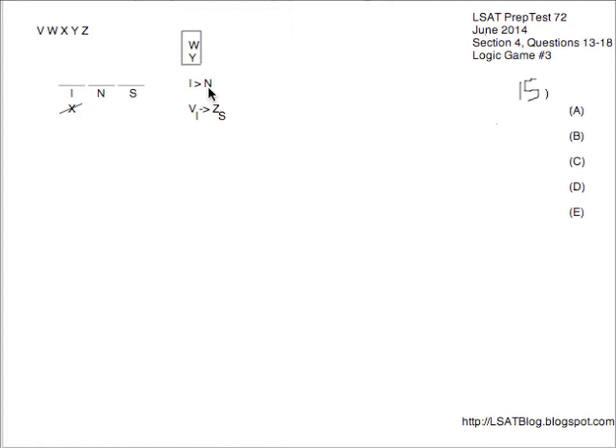If V and X were both on Norway, let's put that down and see what would happen. If we had V and X on Norway, then we'd have to have W, Y, and Z on Iceland. That works out perfectly fine. Not really any issues there. So A is okay.